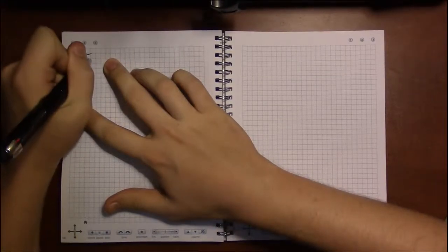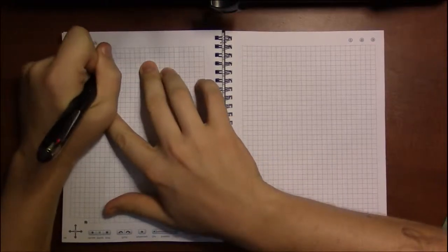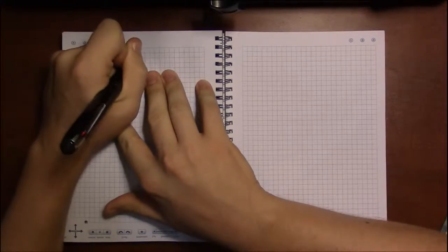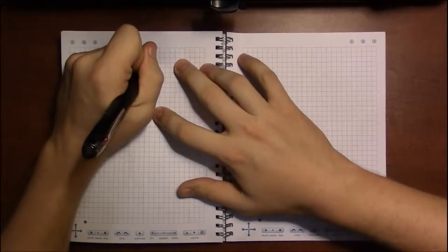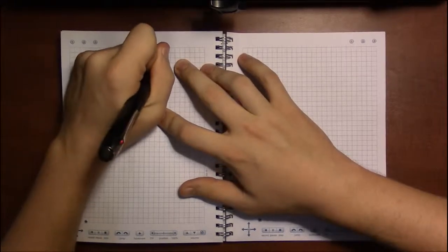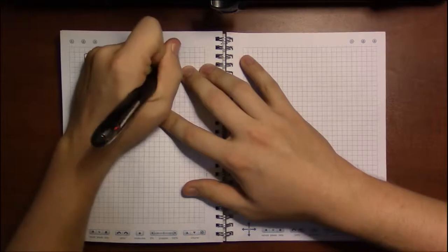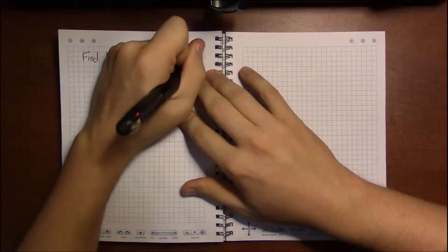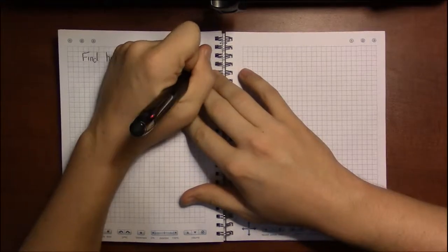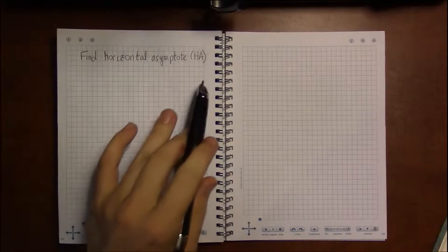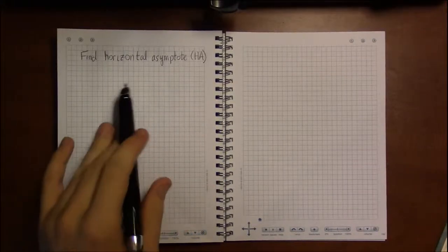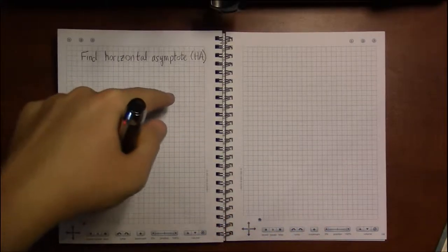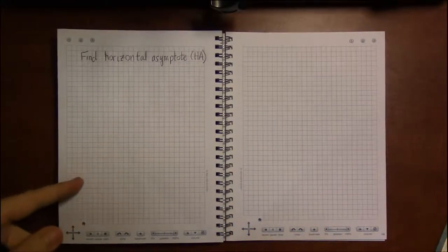To find the horizontal asymptotes, you've got to go through a series of rules. And basically we're going to be comparing the degrees of the numerator and the denominator. And there will be only one horizontal asymptote. A rational function can have multiple vertical asymptotes, but it's only going to have one horizontal or one what we'll call oblique asymptote.